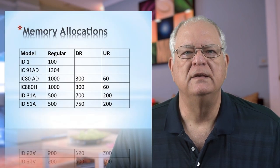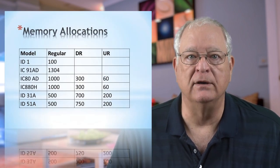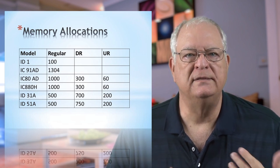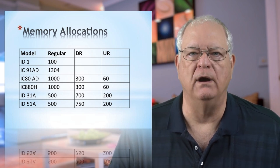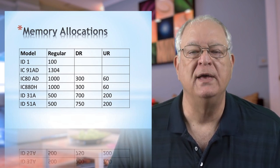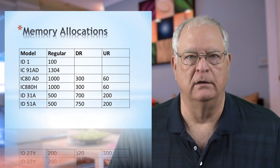The next thing we need to talk about are memories and memory categories. Your ID31A+ or ID51A+ have several memory categories, which have resulted from ease-of-use features added to DSTAR radios over the years. What you see is the addition of DR and UR memories, as well as a shift to more DR and UR memory channels and fewer regular memory channels.